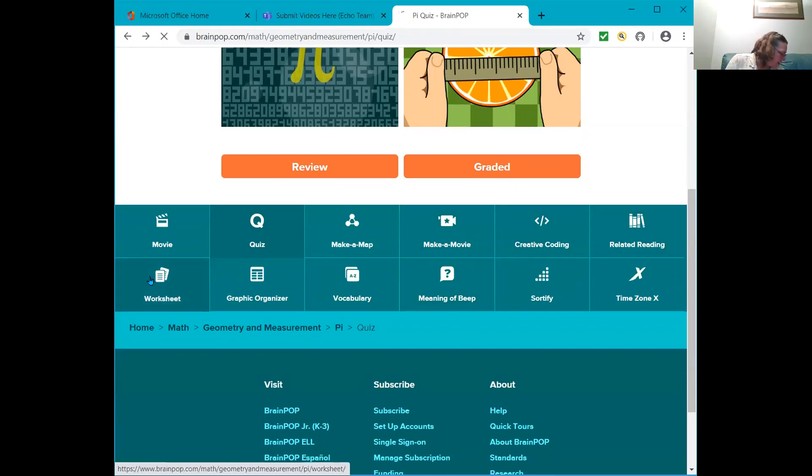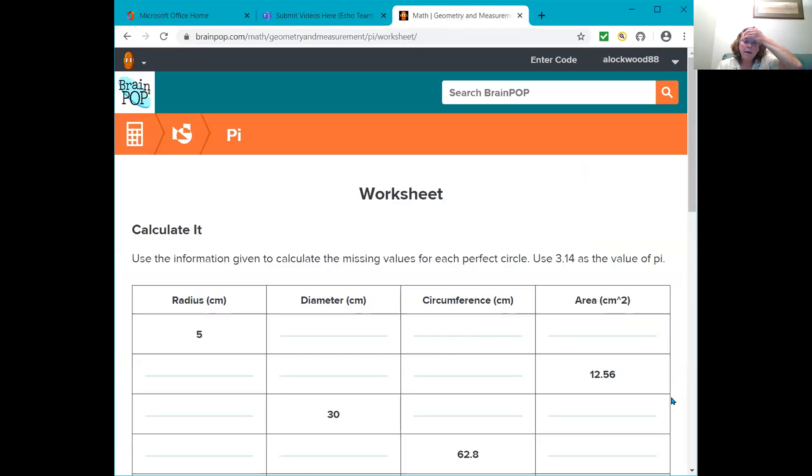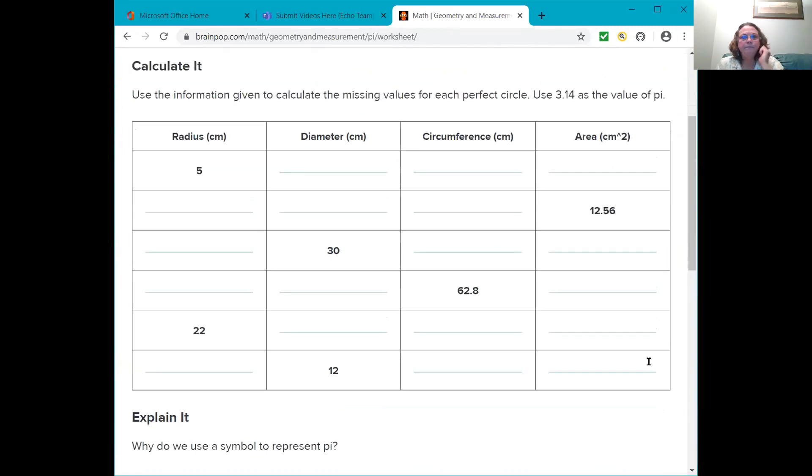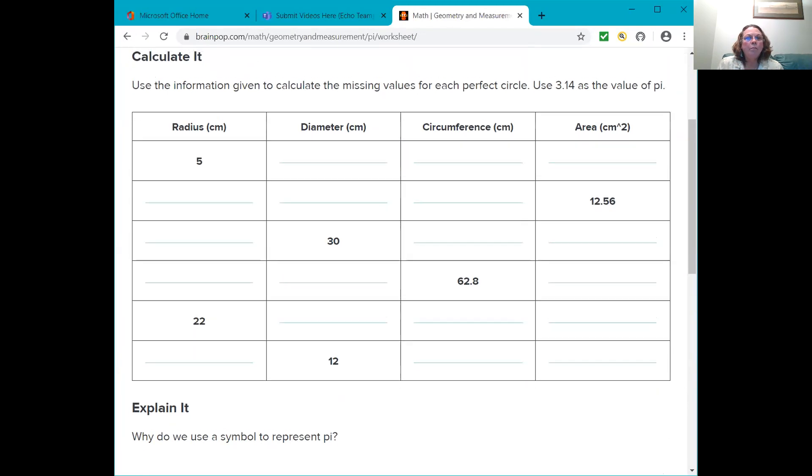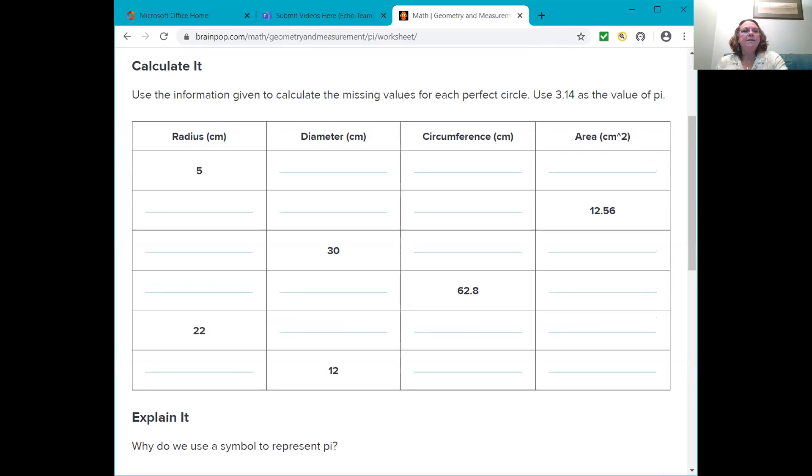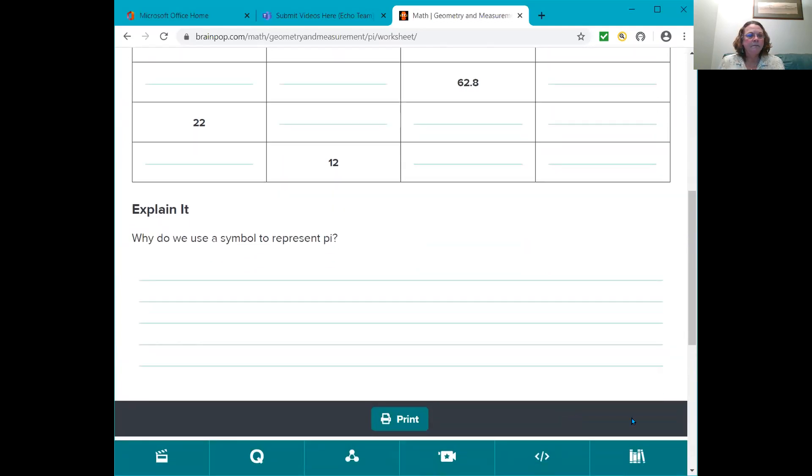So, I want you to recreate this worksheet. I want you to write this on the page you're going to turn in. So, pause the video, please, staff member. And until whoever's watching has a chance to complete this chart. You're going to use the information given to calculate the missing value for each perfect circle. Use 3.14 as the value of Pi. And then explain it. And then down here, I also want you to explain it. Why do we use a symbol to represent Pi? So that goes down here.